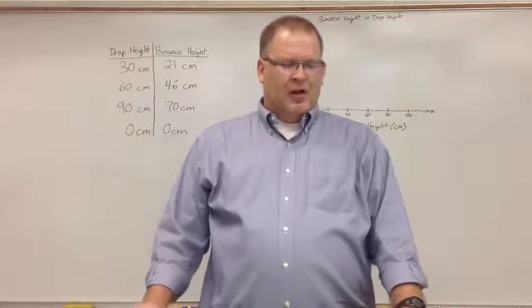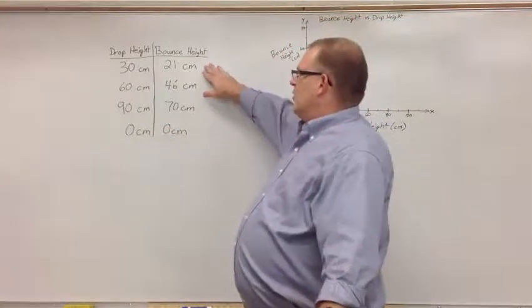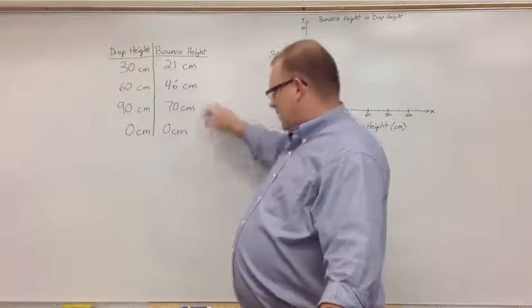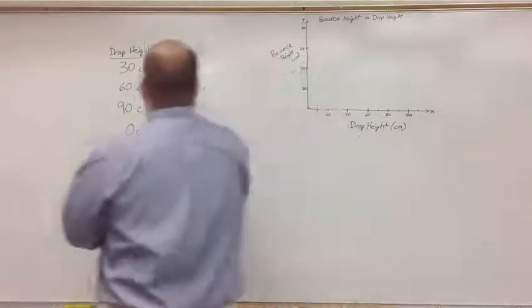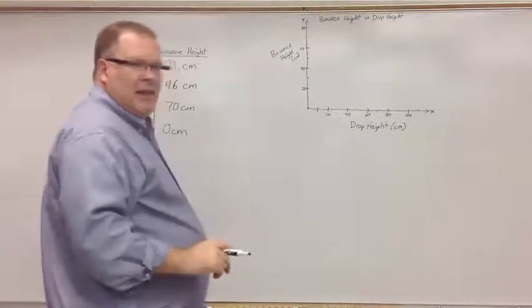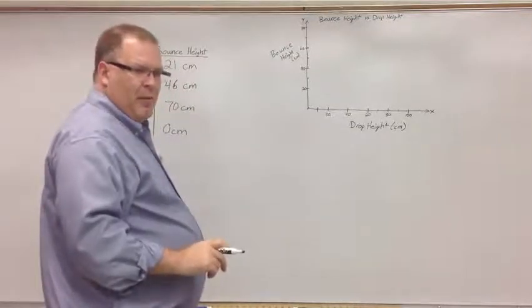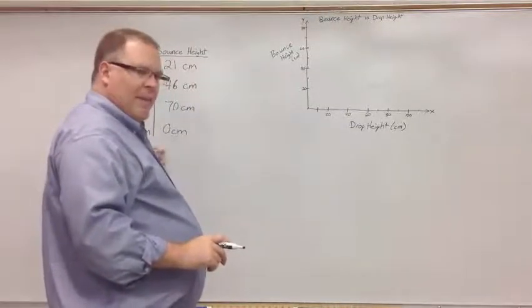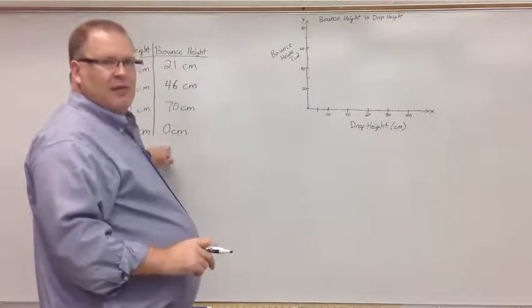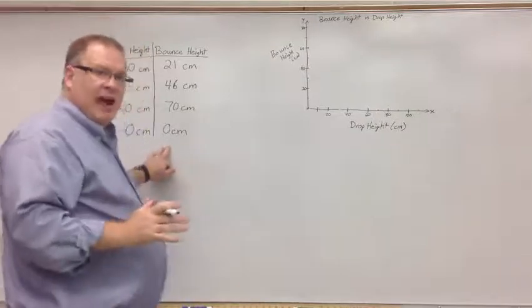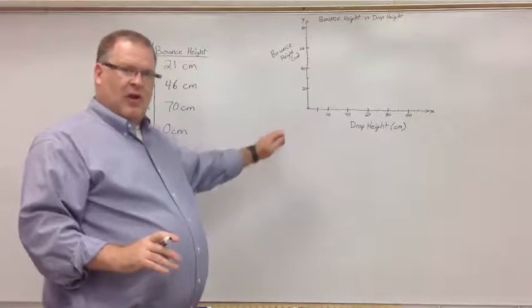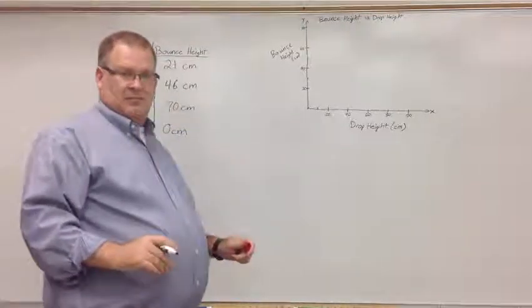Okay, so I've got my data. Here's the data I'm going to use. 30 centimeters bounce back to 21, 60 bounce back to 46, 90 to 70, and then I've got my zero centimeter zero centimeter mark. There's a question on the lab about this. What is this, why is this significant? What does this represent in real life is really what I'm trying to ask you, because this graph represents real life. What happened at this point? That's the question.